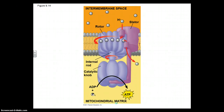Here is a picture of what's happening. Outside in the intermembrane space, you have the hydrogen ions, and they go through ATP synthase, causing the part that's in the membrane to turn. As it does, it generates enough energy for the inorganic phosphate to be bonded back to the ADP, giving us ATP.